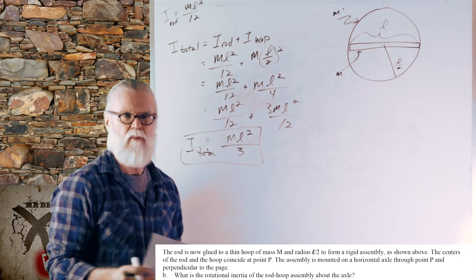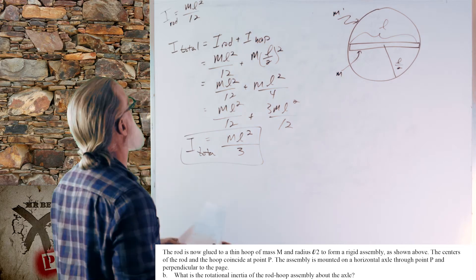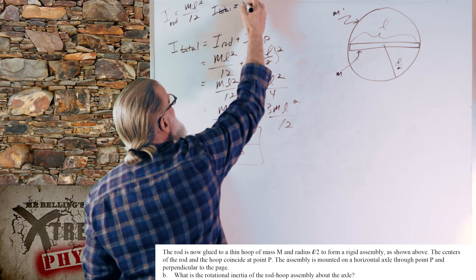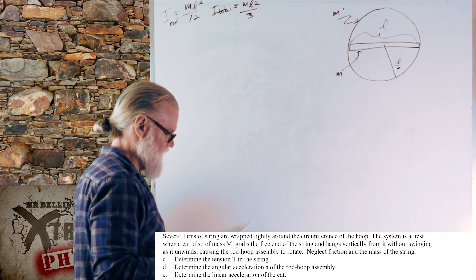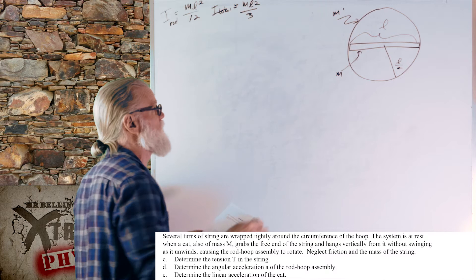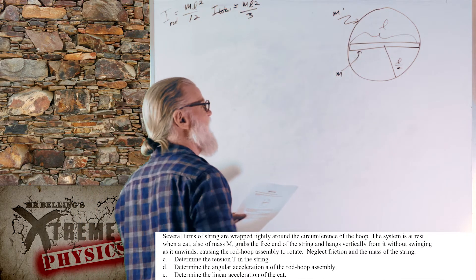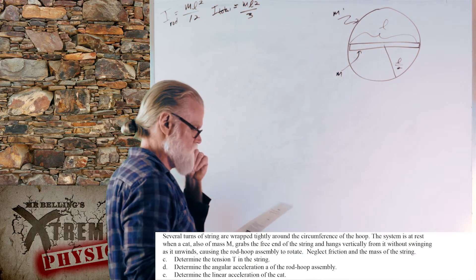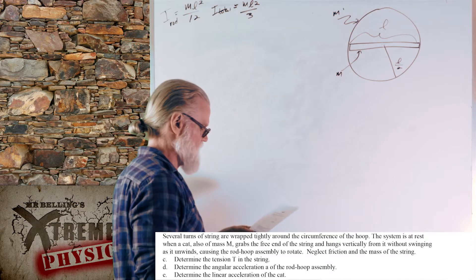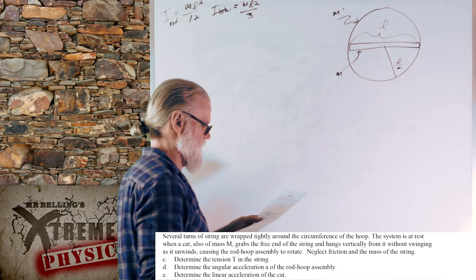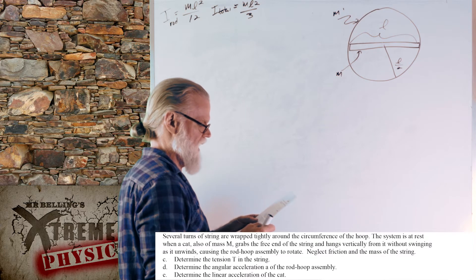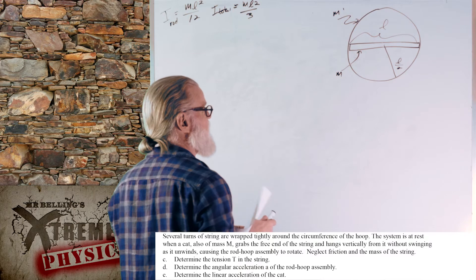So I total equals ML squared over 3. Now: several turns of string are wrapped tightly around the circumference of the hoop. The system is at rest when a cat, also of mass M, grabs the free end of the string and hangs vertically from it without swinging, as it unwinds and causes the rod-hoop assembly to rotate. Neglect friction and the mass of the string. Determine the tension in the string.